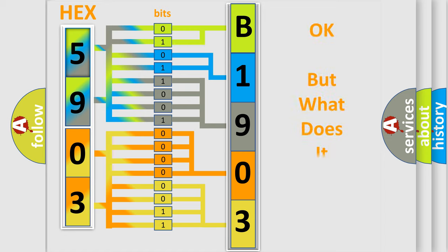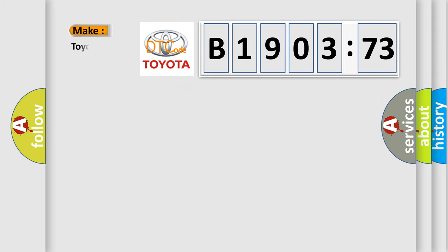We now know in what way the diagnostic tool translates the received information into a more comprehensible format. The number itself does not make sense to us if we cannot assign information about what it actually expresses. So, what does the diagnostic trouble code B190373 interpret specifically for Toyota car manufacturers?